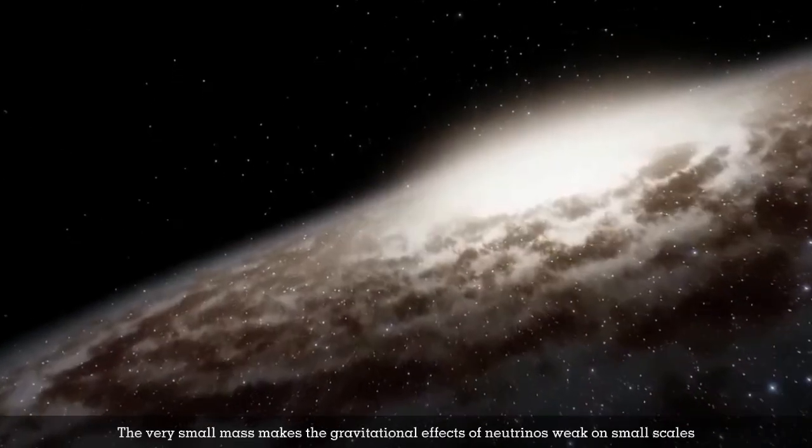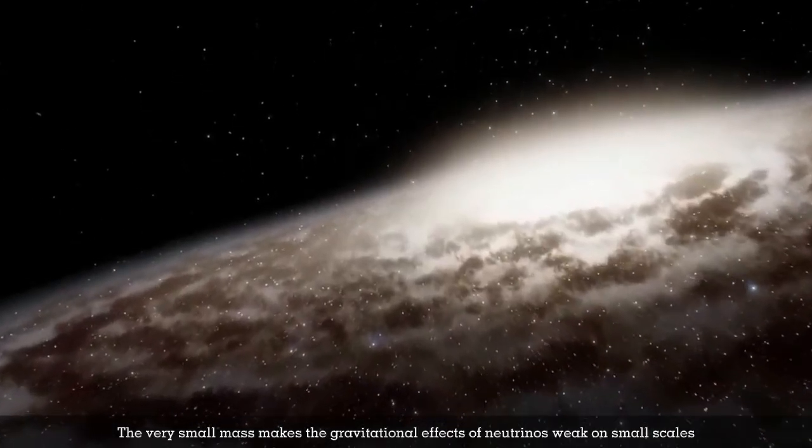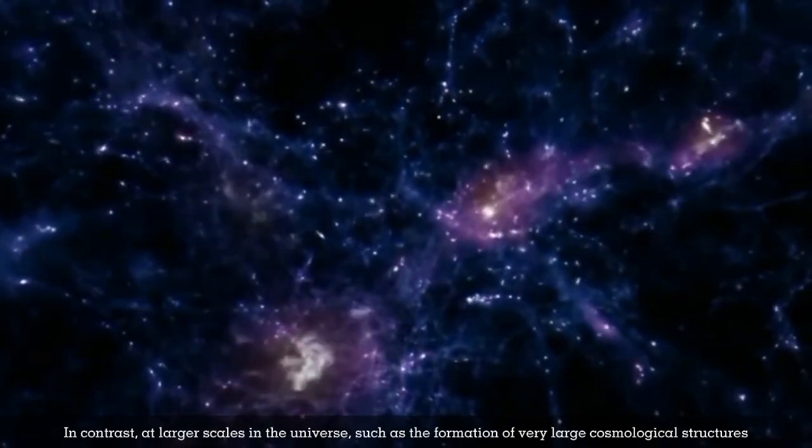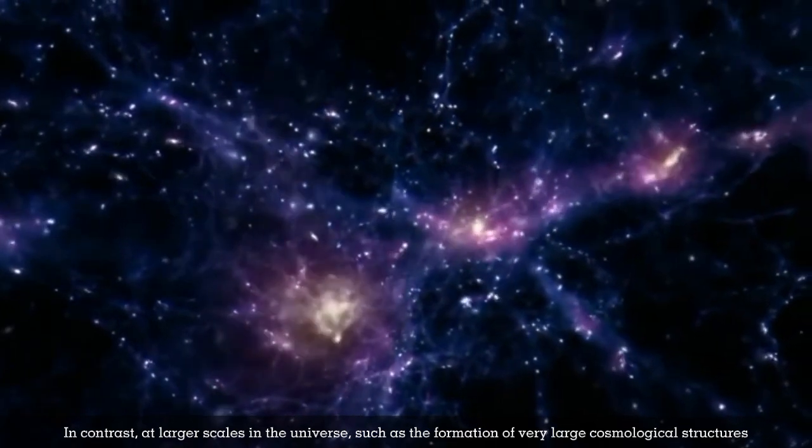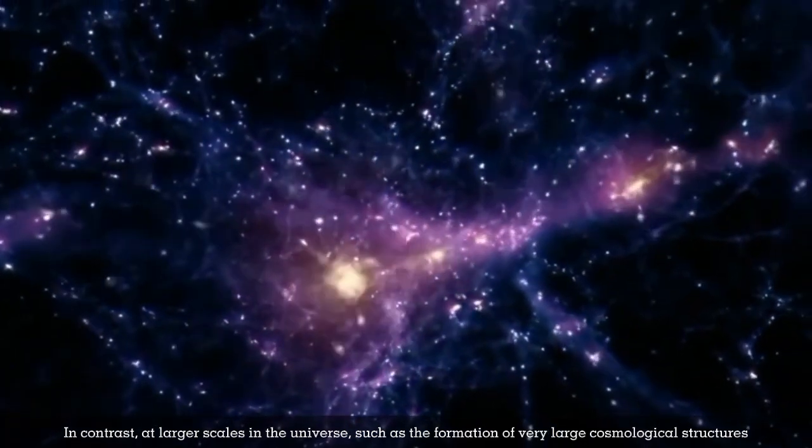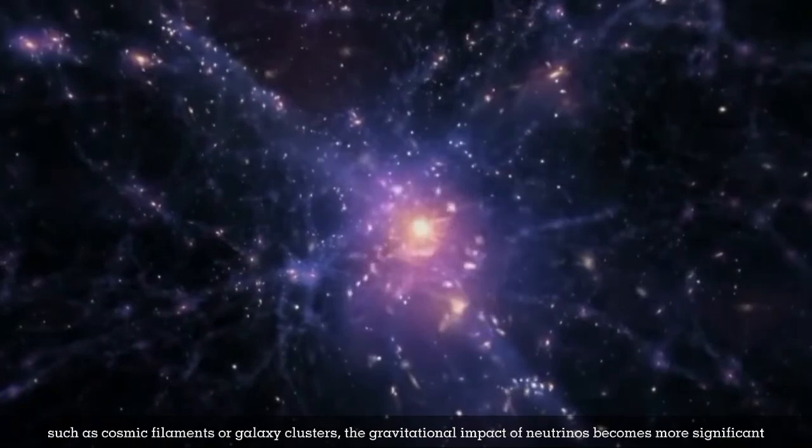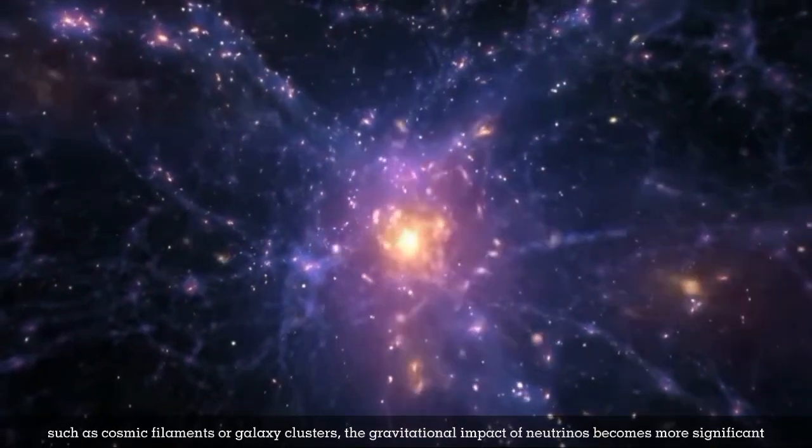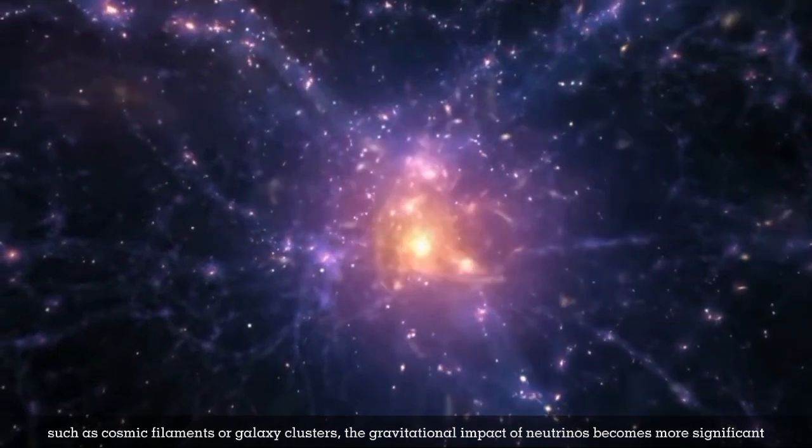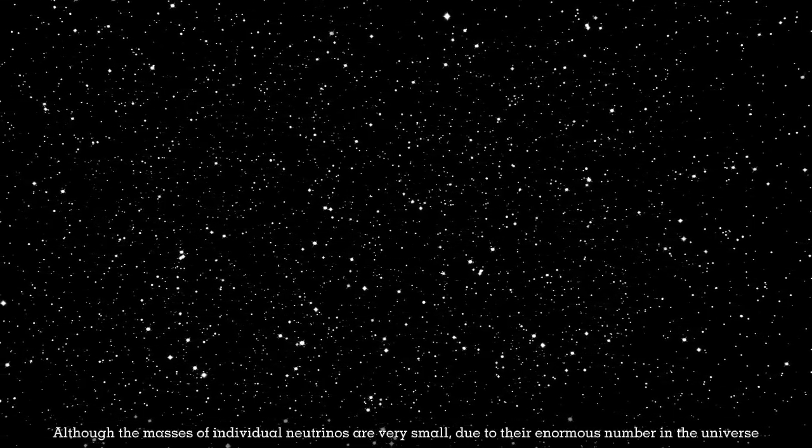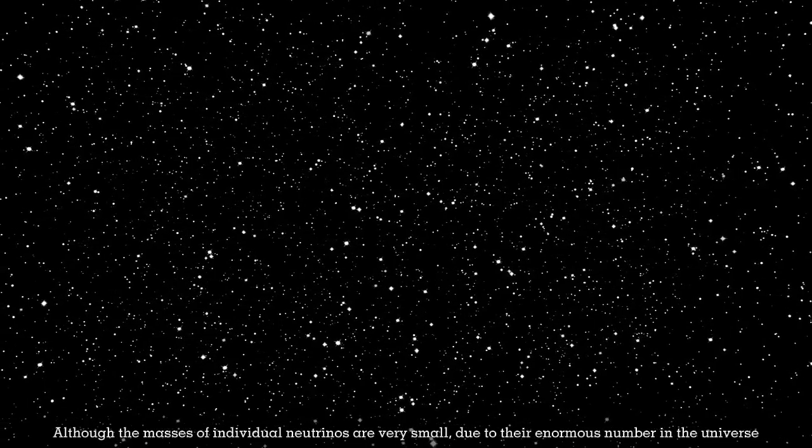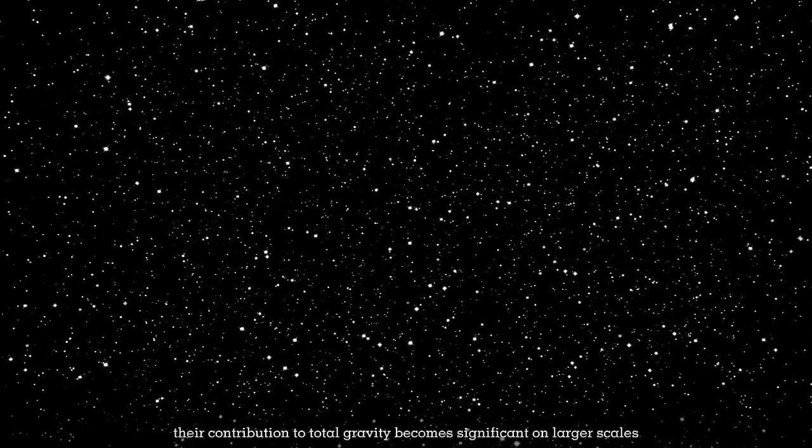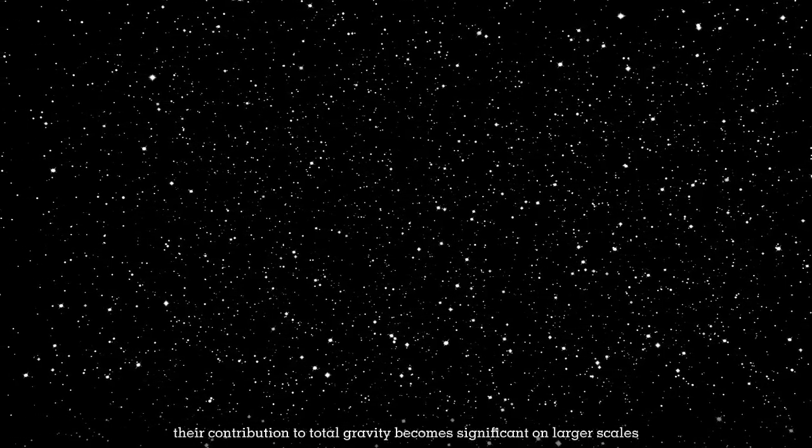The very small mass makes neutrinos' gravitational effects weak on small scales. In contrast, at larger scales, such as cosmic filaments or galaxy clusters, neutrinos' gravitational impact becomes more significant. Although individual neutrinos have very small masses, their enormous number in the universe makes their contribution to total gravity significant on larger scales.